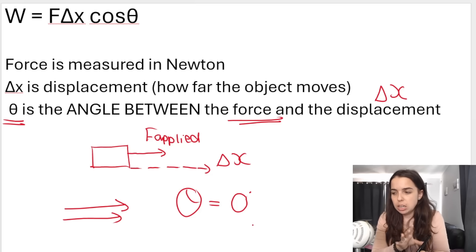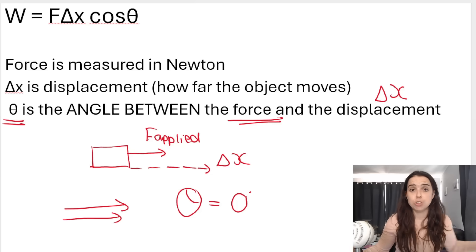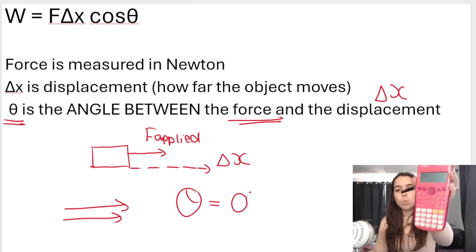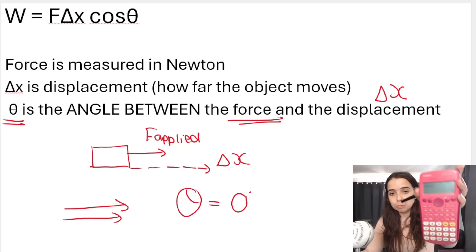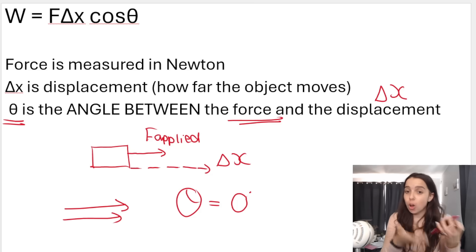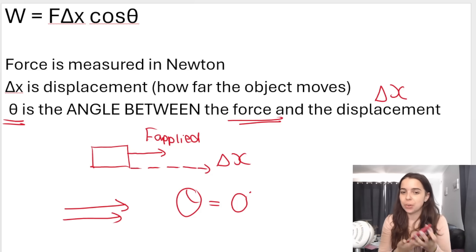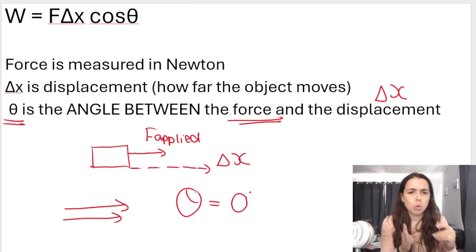Take your calculator and type in cos 0. What you should get is one — a positive answer. Cos 0 is 1. You might think: when do I have a situation where the angle is not zero? Consider if I ask you to work out the work done by the normal force.